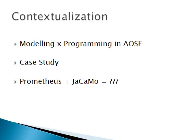Prometheus is applied to specify our models, which are then used to code the system in the JaCaMo programming framework. In this context, it is important to be aware of divergences when these approaches are used in the development of complex multi-agent systems. As a result, we point out lessons learned from using these technologies in combination.